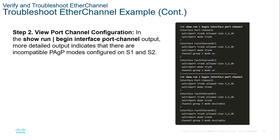We can also look at 'show run' on both Switch 1 and Switch 2. Looking at the port channel information, we see interface port-channel 1 set to trunk, and EtherChannel interfaces 1 and 2 are part of channel group 1 — both set to mode 'on.' Then on Switch 2, we see interface port-channel 1 set as a trunk, but the mode is set to 'desirable.' We know that if one switch is set to On and the other is set to Desirable, it will not create a link — we just figured it out.